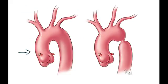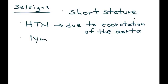Over here you have the normal aorta, and on the other side you have the coarctation, which essentially means a narrowing of this blood vessel, and that can lead to high blood pressure. Another physical exam finding is swelling, also referred to as lymphedema, in particular of the hands and feet.